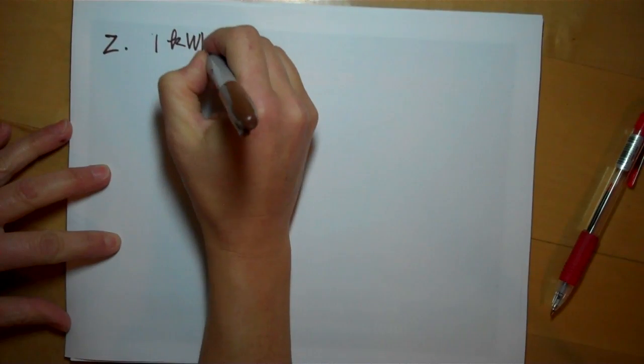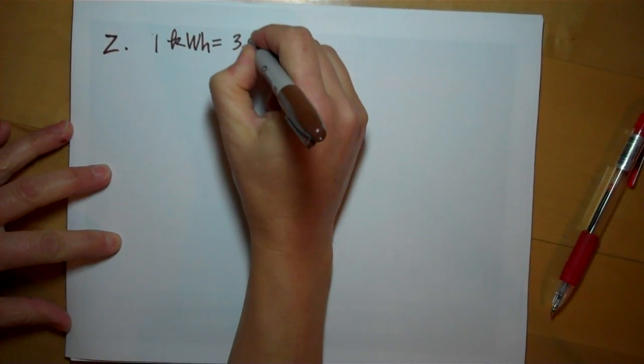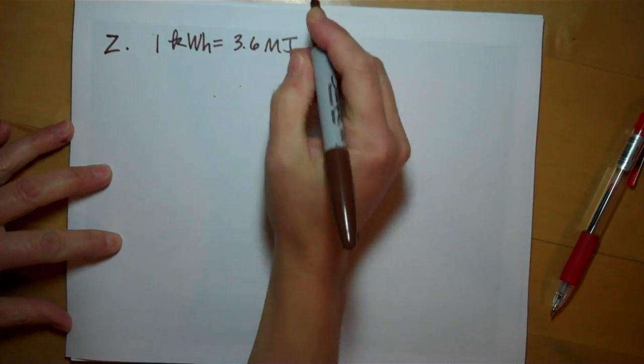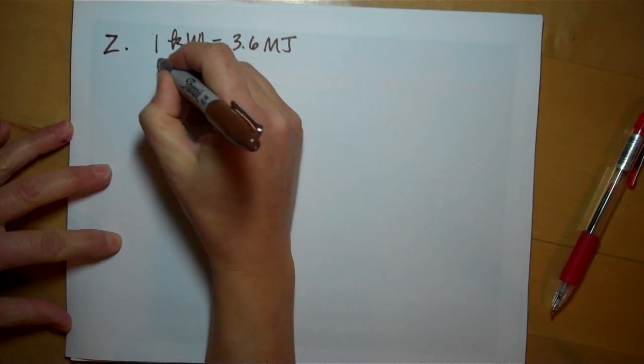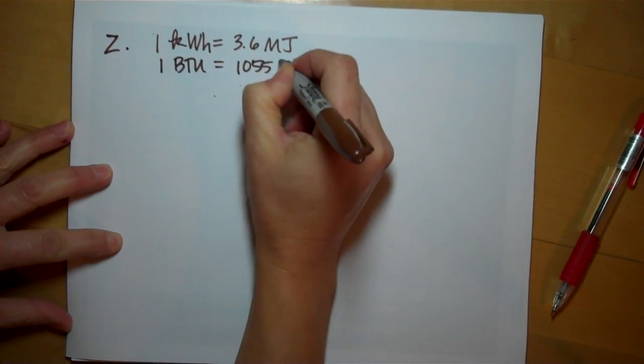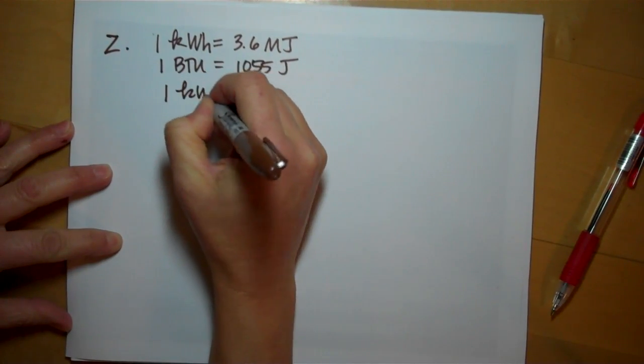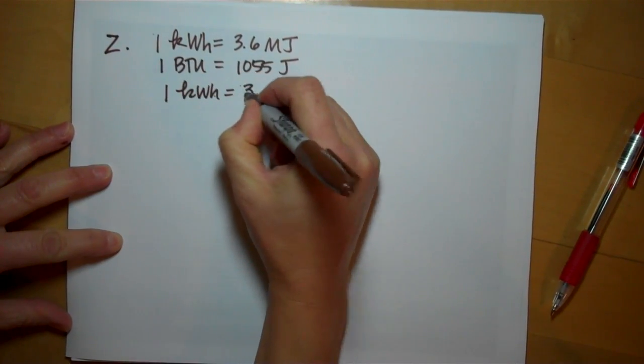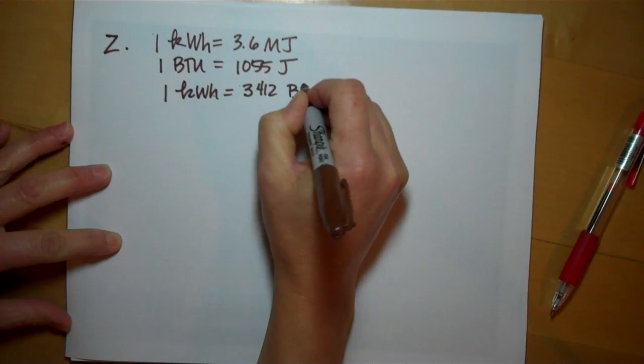One kilowatt hour is 3.6 megajoules of energy. One BTU is 1055 joules. One kilowatt hour is 3412 BTUs.